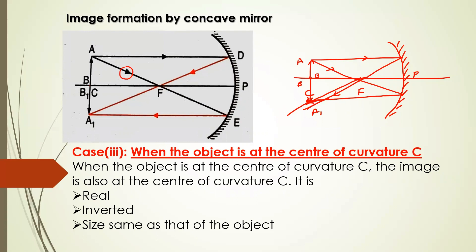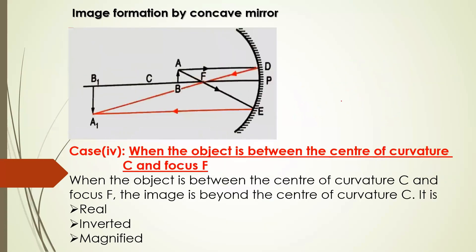I hope this is clear — just make sure that you are drawing it with the help of a scale. The next case we will move on to is when the object is between the center of curvature C and the focus F. So we are taking the object closer to the mirror — it was first at infinity, then beyond C, then on C, and now we are moving closer and keeping the object between C and F.